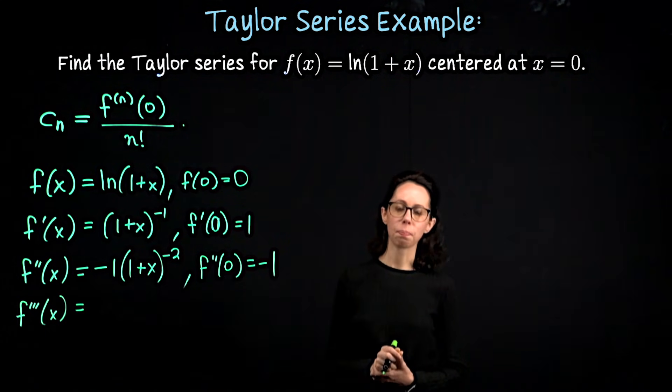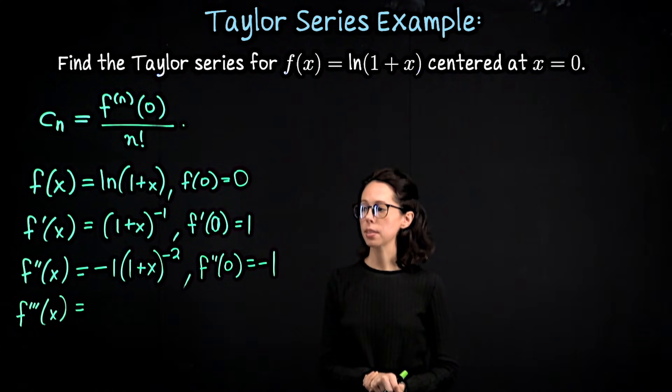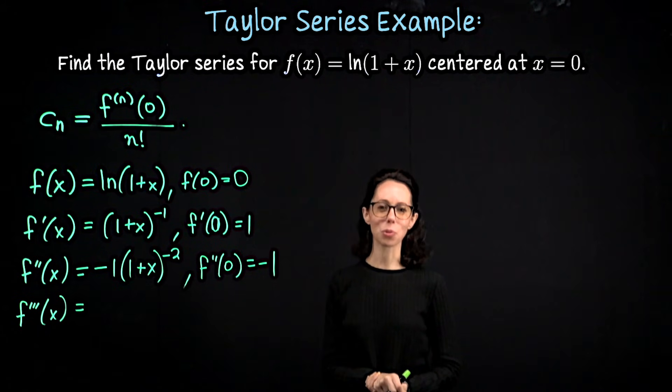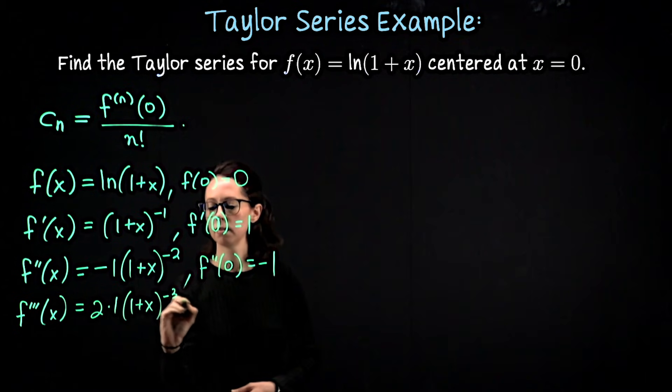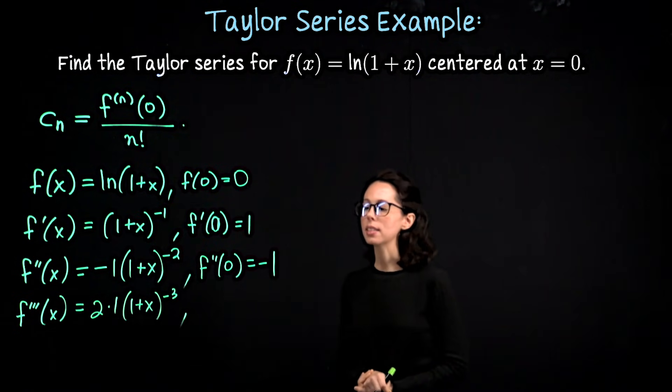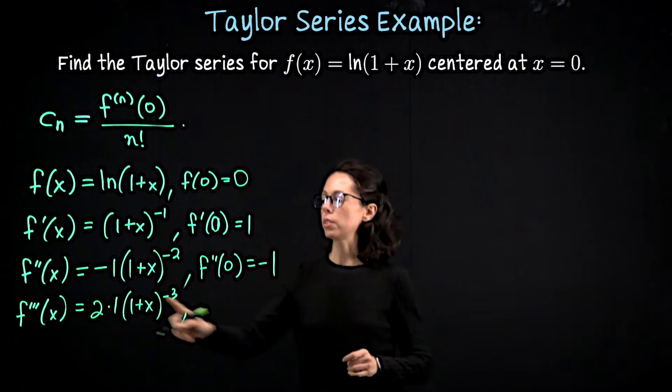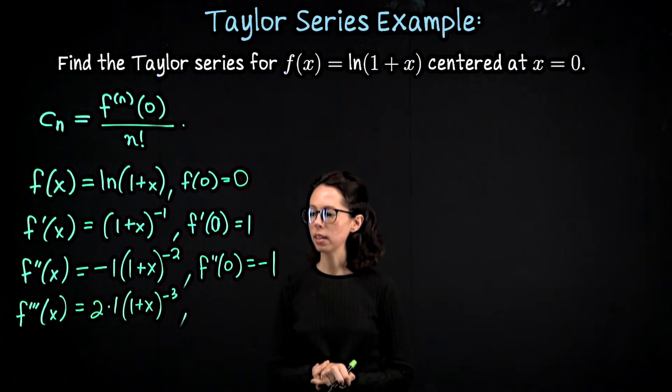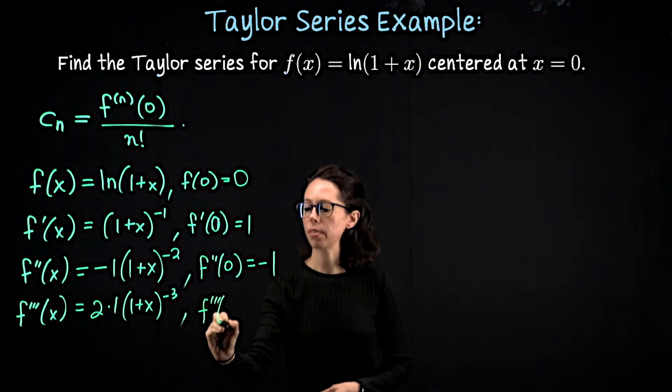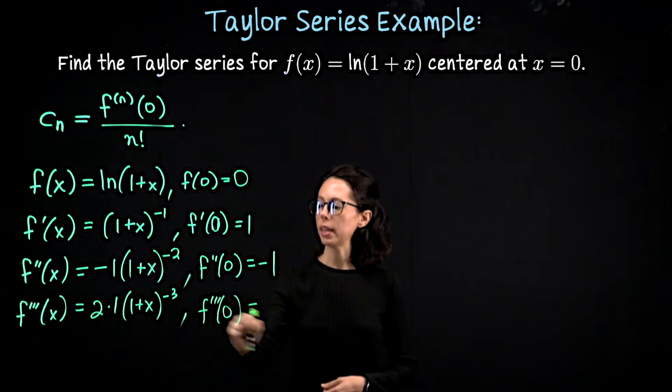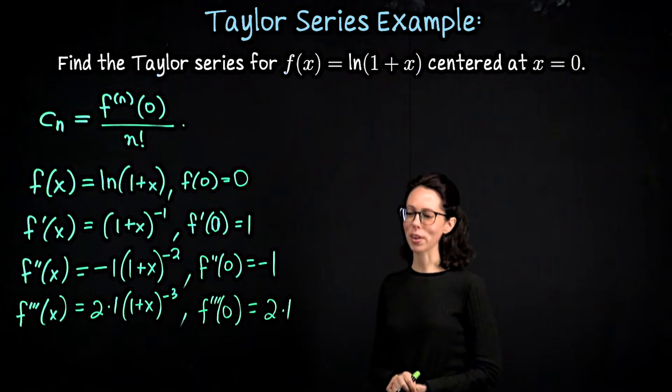The negative 2 will drop down. So one thing we observe is we're starting to switch signs, so this is going to be an alternating series. I want to write 2 times 1 rather than just 2. And the reason for that is sometimes it's easier to spot patterns if you don't combine terms. So I'll mention that again on the next line. If we plug in 0 to this, we're left with the third derivative of f evaluated at x equals 0 is positive 2 times 1. That's just 2, but I'm going to write 2 times 1.